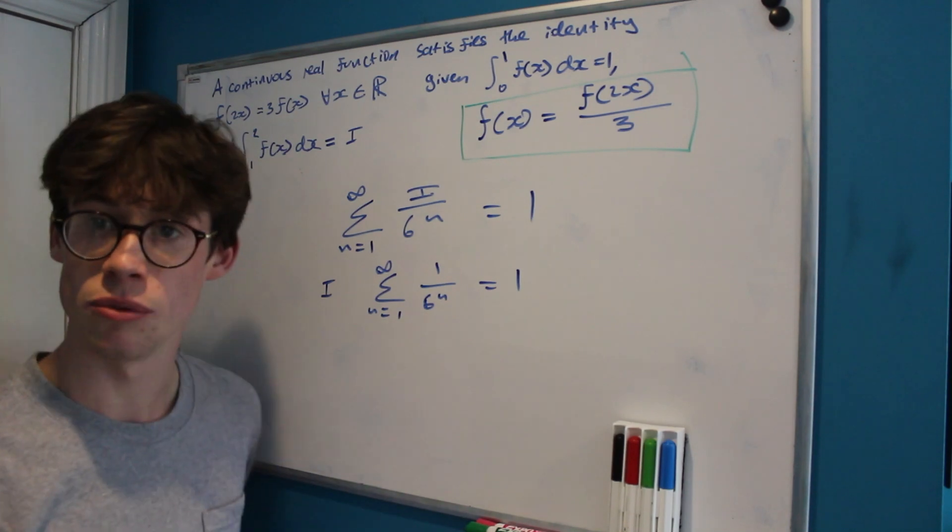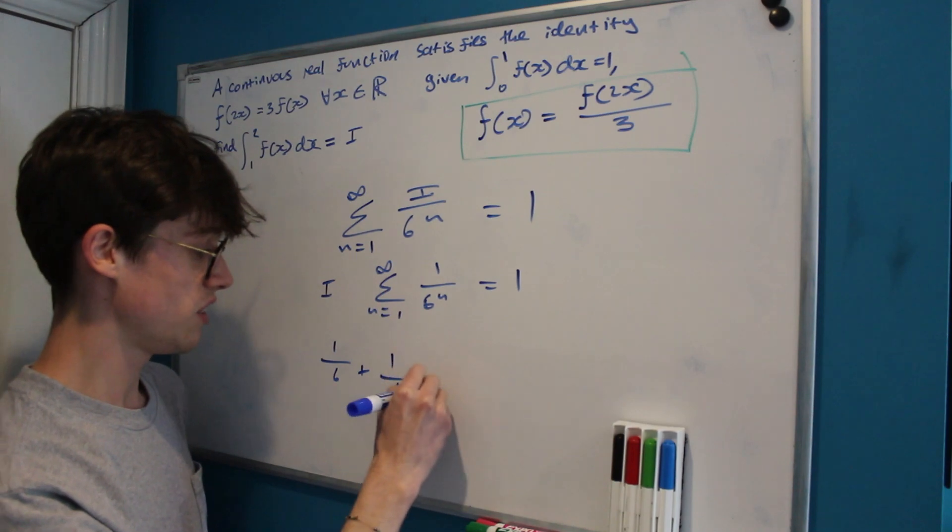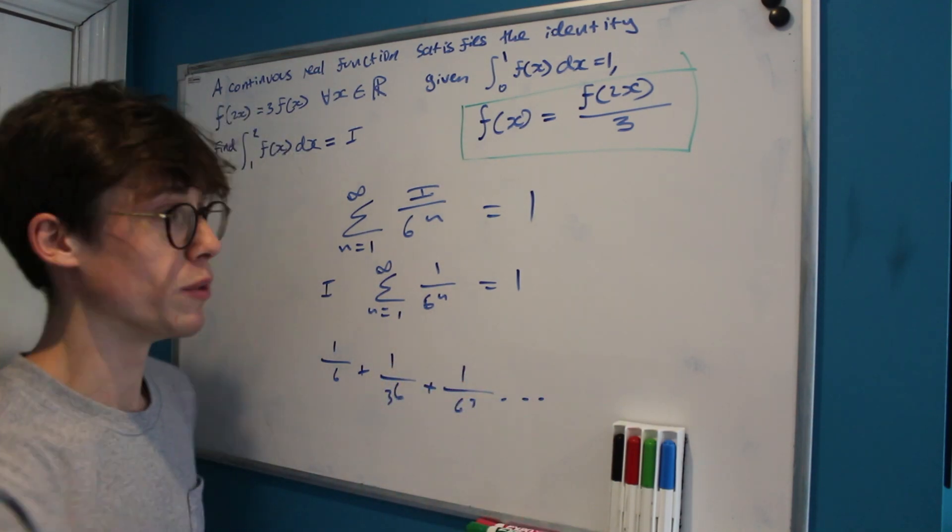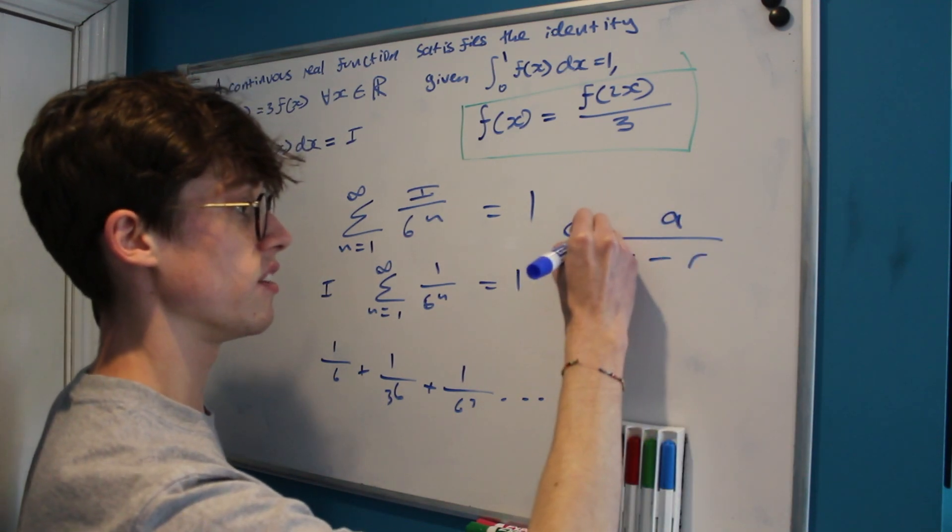Now, given that this is a sum to infinity and it's a geometric series where we're multiplying by 1 over 6 each time, we can use the formula a over 1 minus r as the sum to infinity.